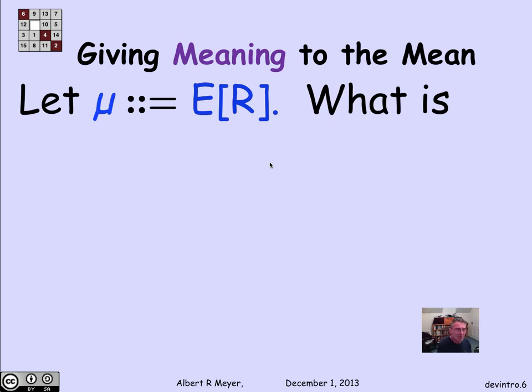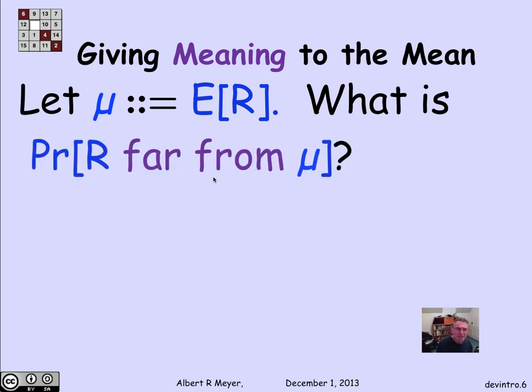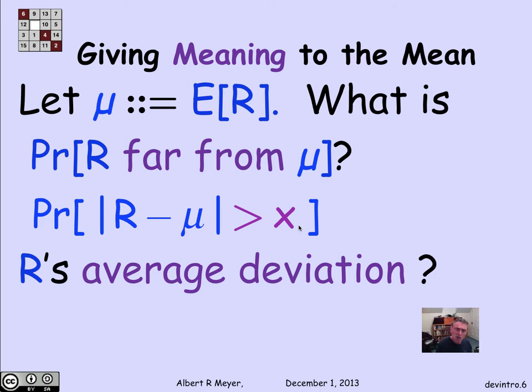So what we can start to say is that when we're trying to give the meaning to the mean, if I let mu be the standard abbreviation for expectation of r, I'm doing that just so it'll fit on the slide nicely in formulas, so mu is the expectation of r. The basic question we're asking is two basic questions. One is, what's the probability that the random variable is far from its mean mu? And you could phrase that as, what's the probability that the distance from r to mu, the absolute value of r minus mu, is greater than some amount x? And the second question that we want to ask is, what's the average deviation? What's the expectation of the distance between r minus mu? What's the expected value of r minus mu?